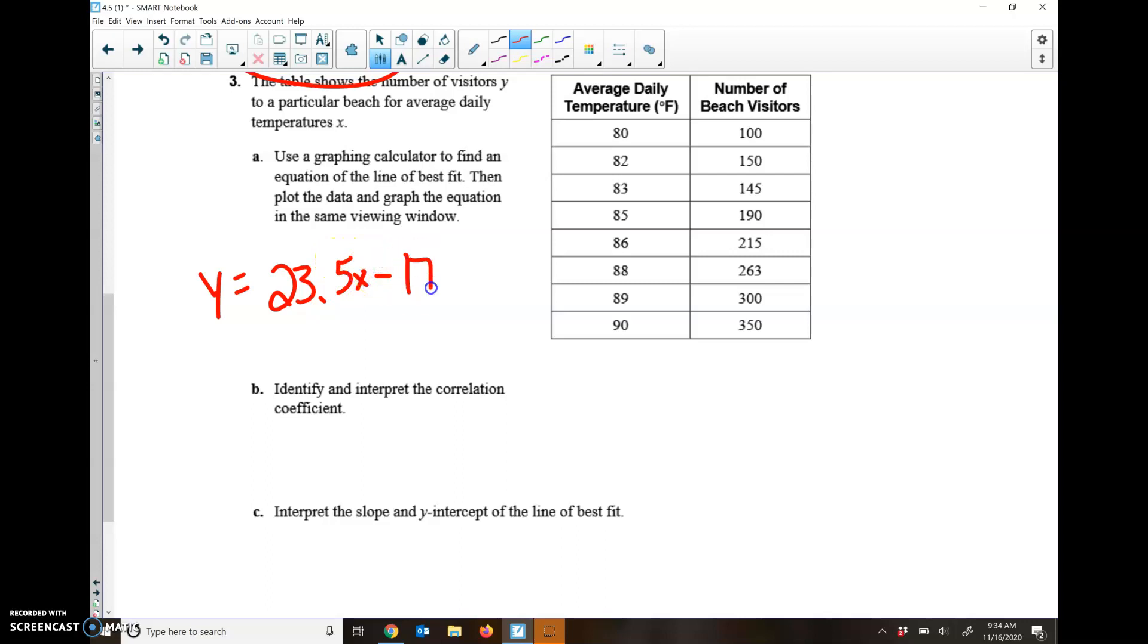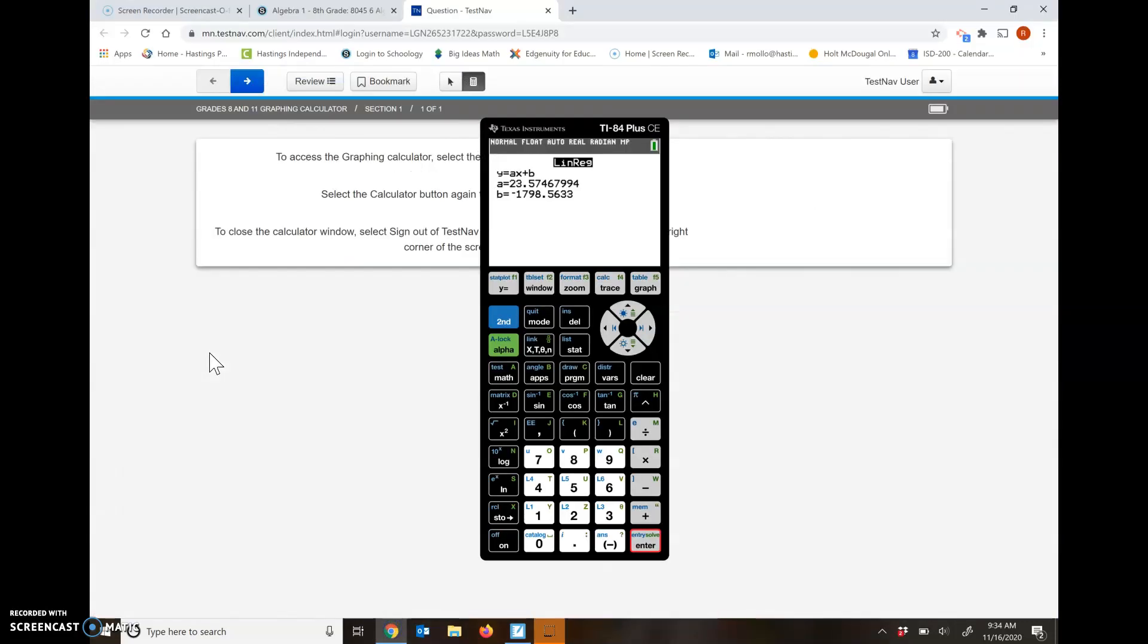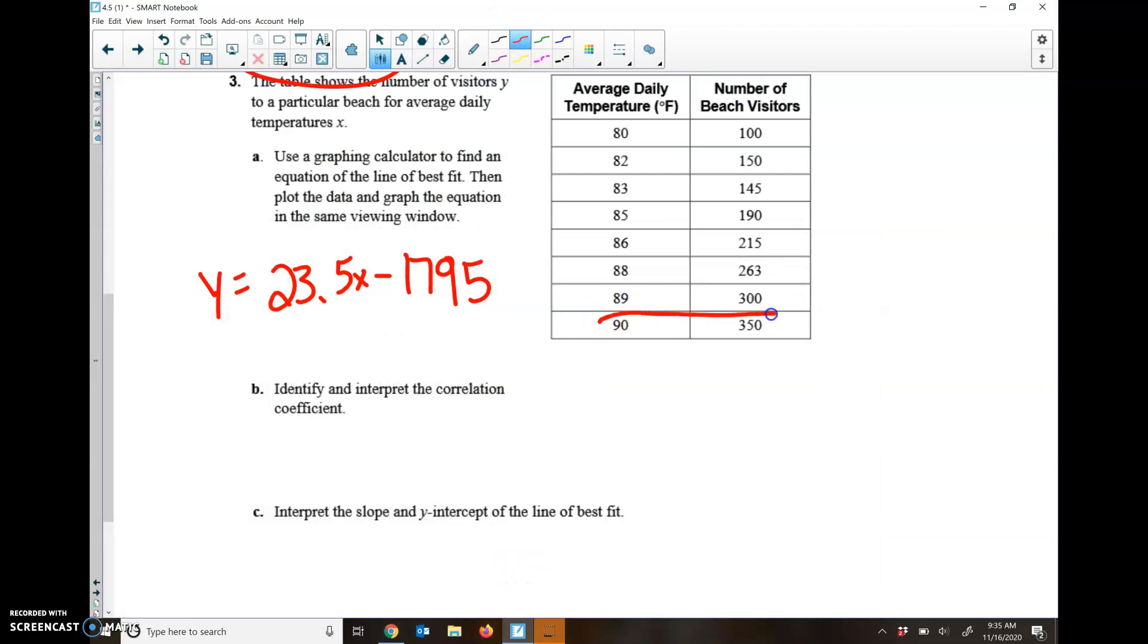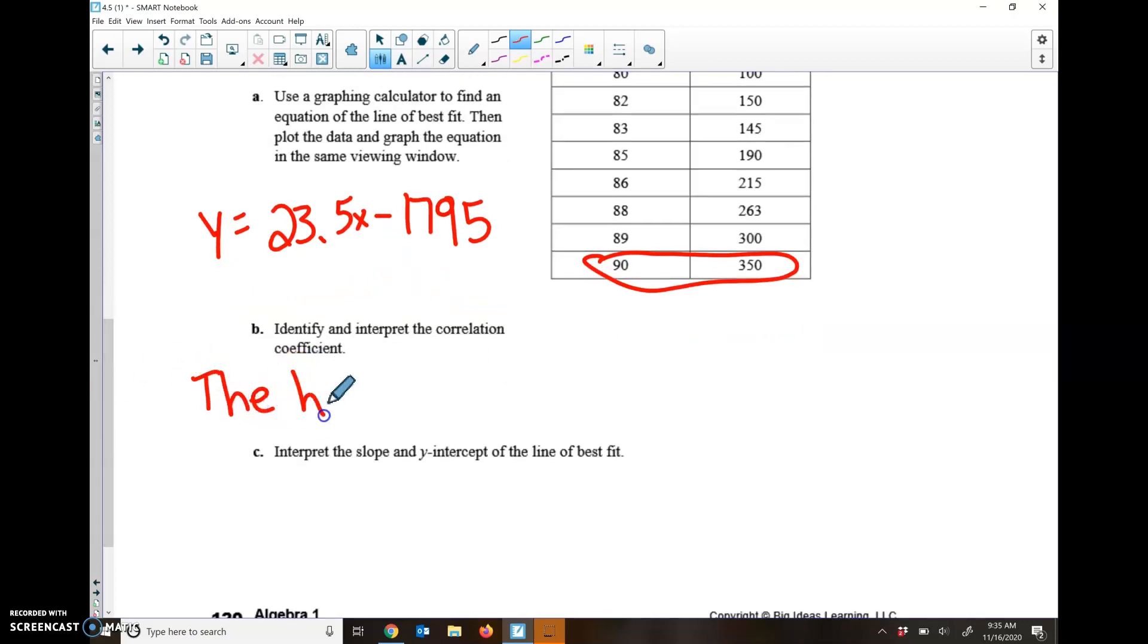Let's kind of see if that really works. If I put in, let's say 100, so 23.5 times 100, and then if I subtract the 1795, so that seems about right. We'd have about 555 people there if it was 100 degrees outside. Let's look at how far off we were on when it was 90 degrees outside. So 90 degrees minus the 1795, about 320, which isn't bad because the problem said when it's 90 degrees you'd be at about 350. So you're off about 30 people. So identify and interpret the correlation. I'd say the hotter it is, the more people are at the beach.